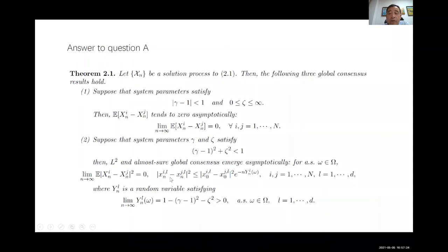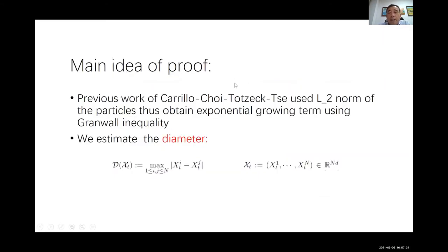The key reason this proof works — which previous papers did not achieve for the particle system — is that instead of using the L2 norm directly (which gives exponential growth via Gronwall inequality), we estimate the diameter: the L-infinity distance between particles i and j. This is the right norm for getting convergence directly on the particle system rather than on the mean field limit.